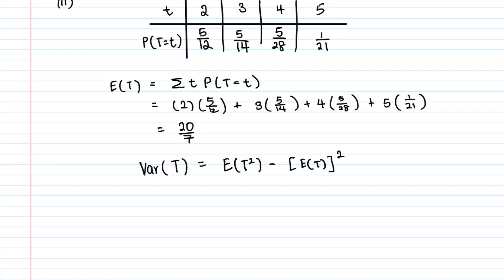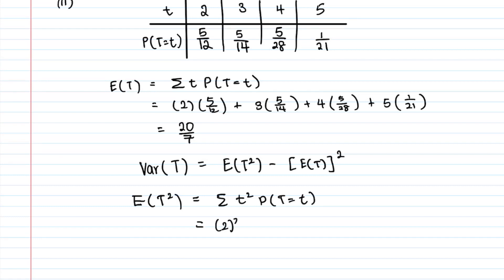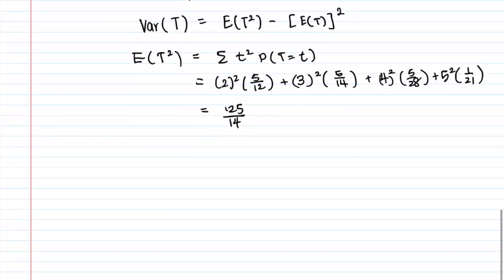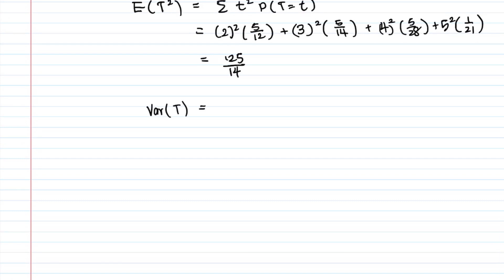E(T²) = sum of t² times P(T=t), so: 2²×(5/12) + 3²×(5/14) + 4²×(5/28) + 5²×(1/21). This gives E(T²) = 125/14. Now Var(T) = 125/14 − (20/7)² = 75/98.